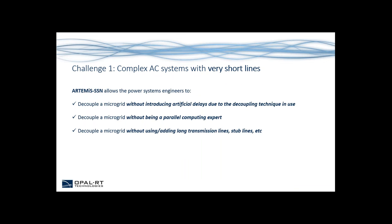Artemis SSN allows power systems engineers to decouple a microgrid without introducing any artificial delays, without needing to be a parallel computing or CPU architecture expert, and without adding long transmission lines or stub lines solely for the purpose of achieving successful numerical simulation.